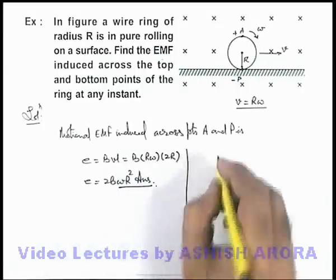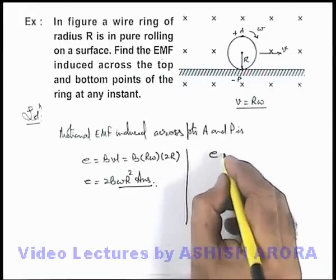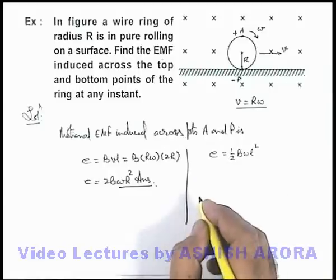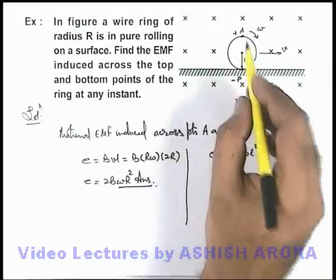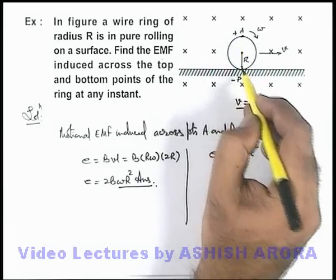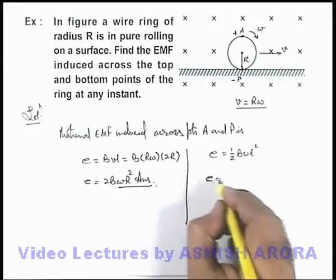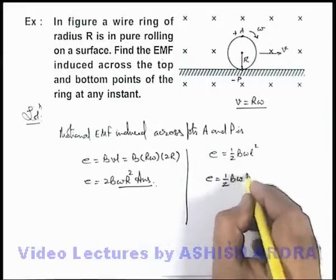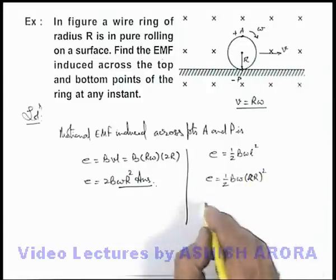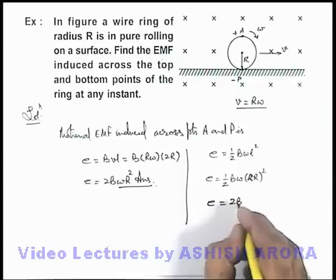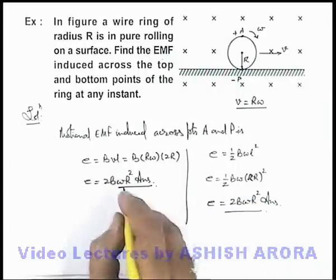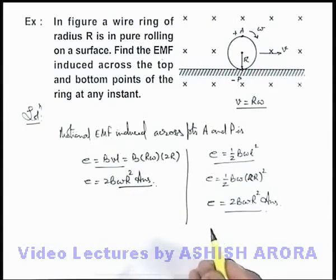This can also be handled by using the motional EMF of a rotating rod, that is half B omega l squared. In the situation when we treat this ring to be replaced by a vertical rod of length 2r hinged at the bottom most point, the EMF we can write as half B omega times (2r) whole squared. On simplifying we are getting the same result: 2Bωr².